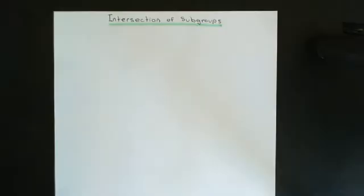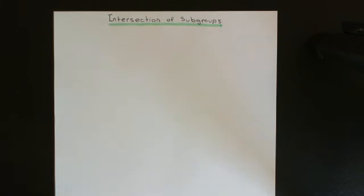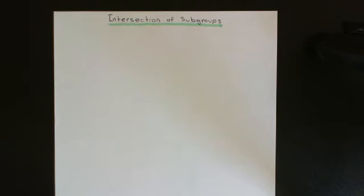Just before we actually begin our discussion of the intersection of two subgroups, what I want to talk about firstly is something I really should have talked about in the previous video when we introduced the concept of a subgroup — and that is the strict notation for a subgroup, because the notation that I gave you is strictly incorrect. It's almost correct, but strictly speaking incorrect. It's an incorrection that people often make and use casually, and the meaning is still understood, but strictly speaking it is still incorrect. So I want to firstly talk about the strict notation for a subgroup, and then we'll move on to the intersection of two subgroups.